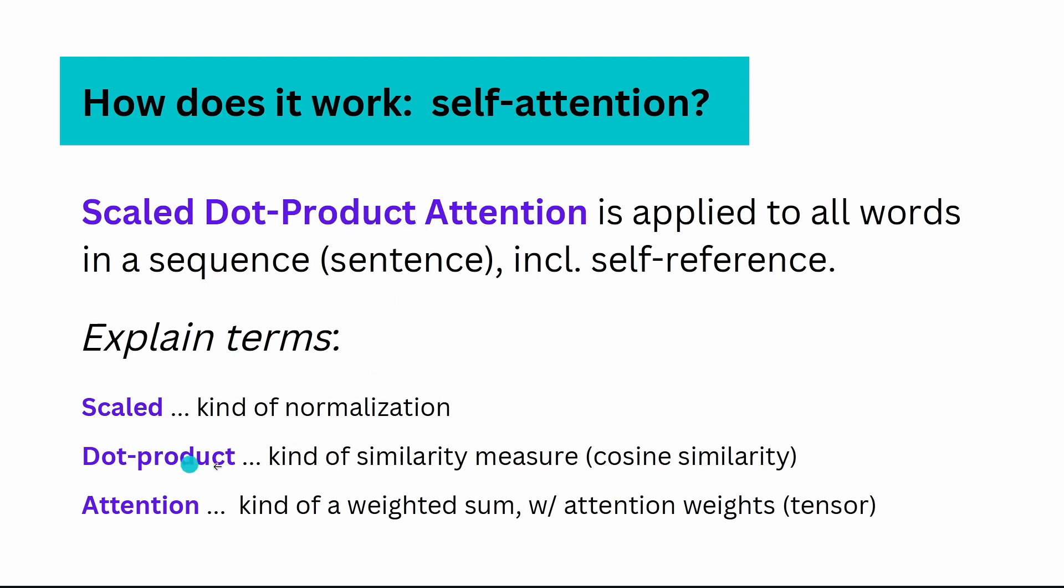A dot product, we know dot products. Dot product is a kind of similarity measure. Remember when we had the word embeddings and sentence embedding and we calculated the cosine similarity of vectors? This is exactly a dot product. What is attention? Attention you can imagine is something like a weighted sum. So what we are looking for is some attention weights or some weight tensor specifying our attention.